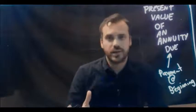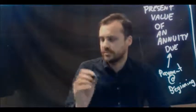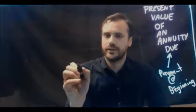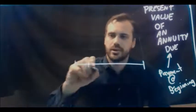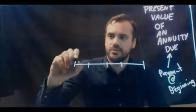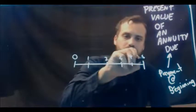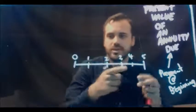Okay, so a timeline for an annuity due might look something like this. Here's our timeline. Now each payment is going to be made at the start of each period. So zero, one, two, three, four, five. Let's have five periods here.